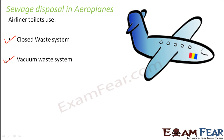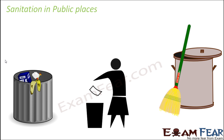That is why airlines have different mechanisms for handling sewage disposal. As good citizens, we need to ensure proper sanitation is maintained in public places. At home, it is easier to control cleanliness because it is our own space and we can take good care of it.